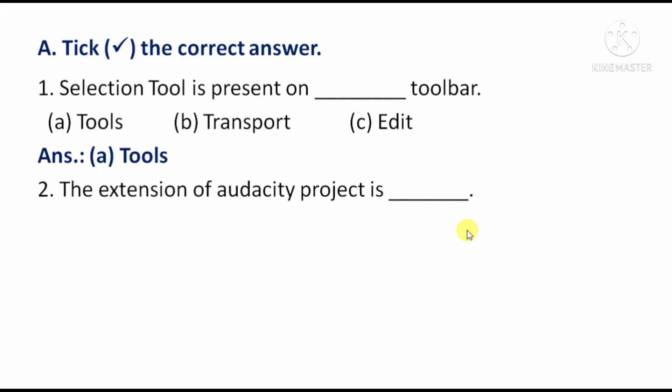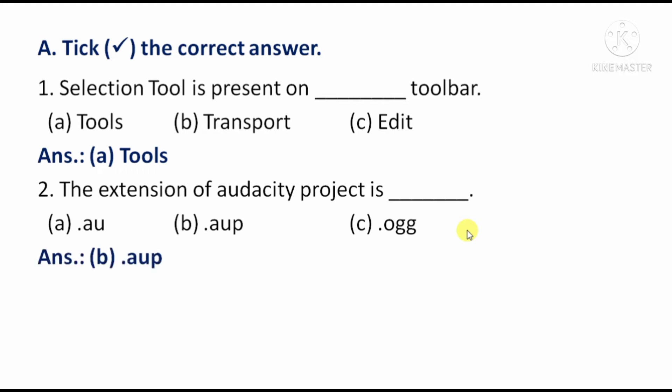Next question — The extension of an Audacity project file is? Option A: .AU. Option B: .AUP. Option C: .OGG. The right answer is Option B, .AUP.